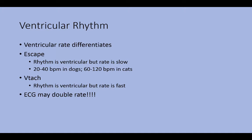When looking at a wide and bizarre complex, remember it could be an escape rhythm rather than VT. In an escape rhythm the rate will be slower — as slow as 20 to 40 beats per minute in dogs, 60 to 120 in cats — whereas VT has a wide and bizarre rhythm at a very fast rate. Also remember that the ECG can double the rate if a tall T wave is mistaken for an R wave, so you must listen to the animal to determine if it's truly a fast rate or an escape rhythm.